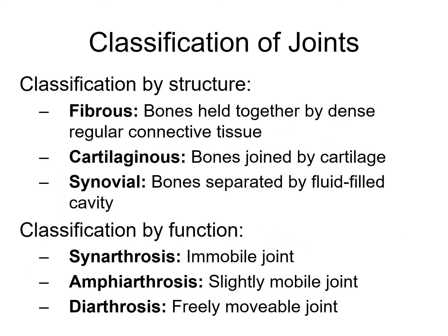We can classify our joints based on structure and range of motion. Structure tells you how the two bones are connected. If they are connected by fibrous connective tissue, we call it a fibrous joint. If held together by cartilage, it's a cartilaginous joint. If the bones are separated by a fluid-filled sac and cavity, we call it a synovial joint.